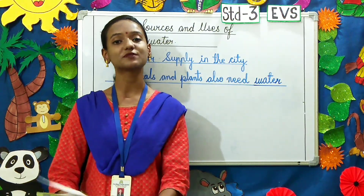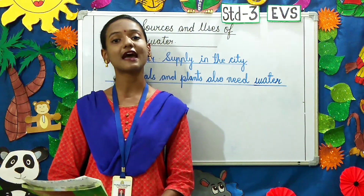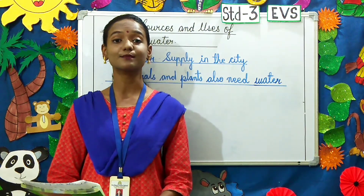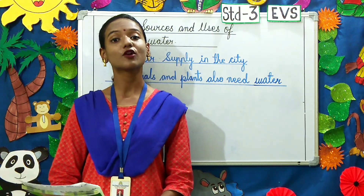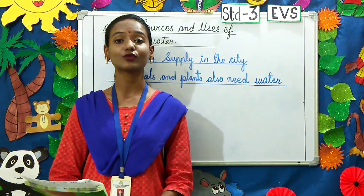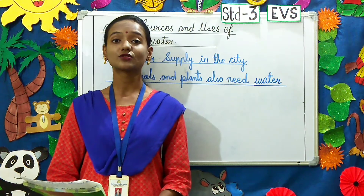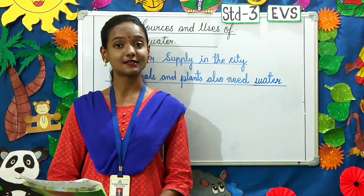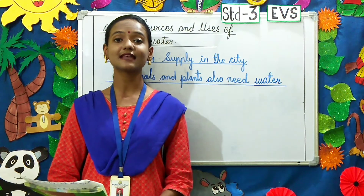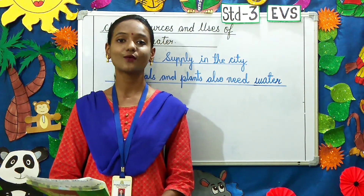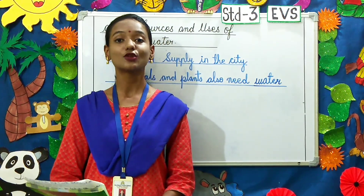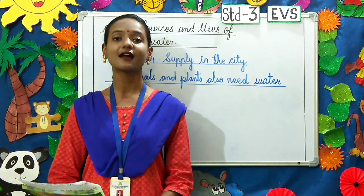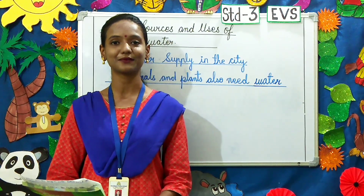Today we saw Chapter 15: Sources and Uses of Water. The earth is called the blue planet because it contains three-fourths of water. We saw the different sources of water, water supply in the city, and how animals and plants also need water. Notes and worksheets will be uploaded on the school website — kindly go through them and study well. Thank you.